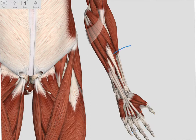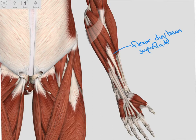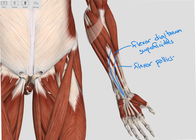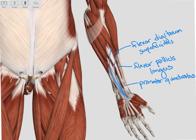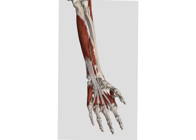Deep to this musculature, we can see our flexor digitorum superficialis, and we can follow its tendons down into the fingers. Distal to that, we have our flexor pollicis longus, and its tendon comes down and runs underneath our flexor pollicis brevis. We can also see our pronator quadratus at the distal radio-ulnar joint, which works with our pronator teres at the proximal radio-ulnar joint. Deep to these muscles, we find our flexor digitorum profundus, which we can again track down to each of the four fingers through the tendons.